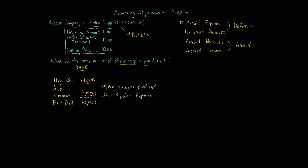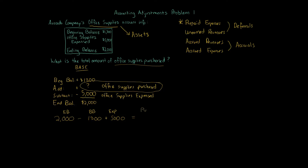You can use BASE to calculate any of these numbers. To isolate the office supplies purchased, use algebra: start with the $2,000 ending balance, subtract the beginning balance of $1,300, and add back the $5,000 expense (since we normally subtract it). That gives us $5,700 — that is the amount of office supplies purchased.